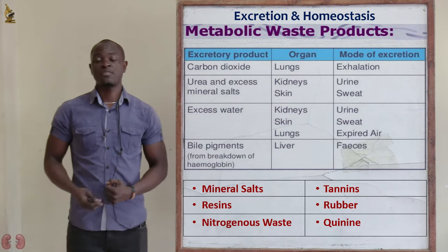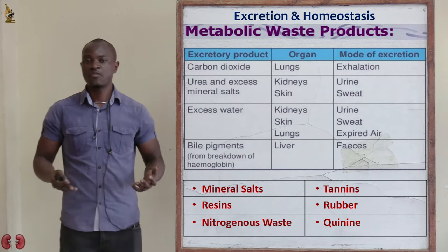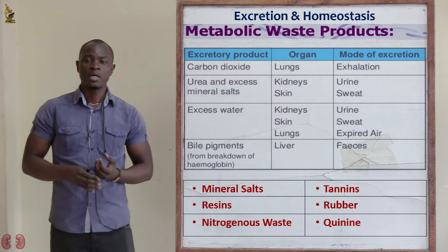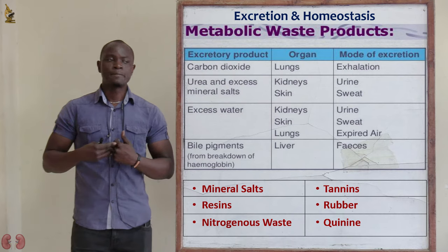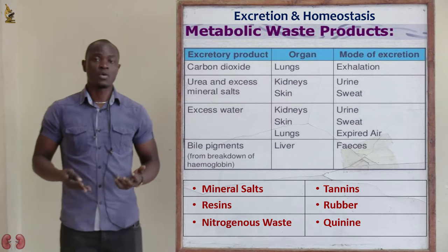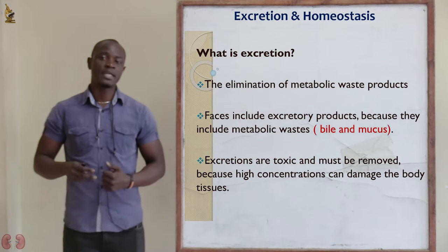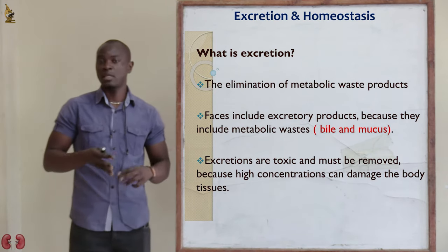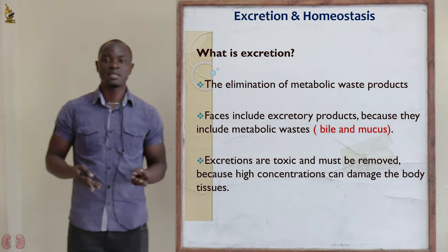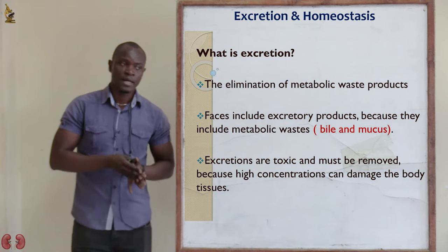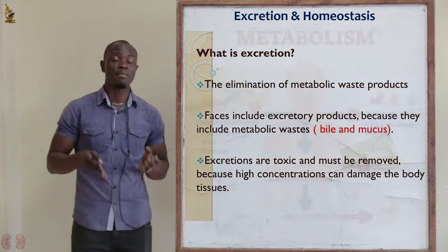The waste products released from the bodies of living organisms mainly include nitrogenous waste, different mineral salts such as sodium, calcium, and magnesium, and also tannins, resins, quinine, myrrh, etc. These are various waste products that plants release from their bodies. These products must be eliminated immediately because if left in the body, they will poison the cells — somatic cells, white blood cells in mammals, and cells in plants.